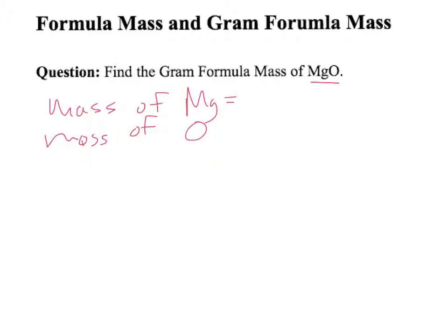If you look at your periodic table, the mass of magnesium is going to be approximately 24.305 grams in gram formula mass units. And the mass of oxygen is going to be approximately 15.9994 grams.